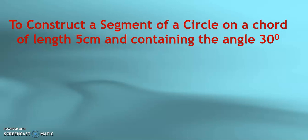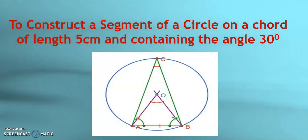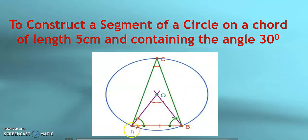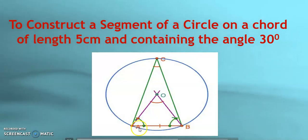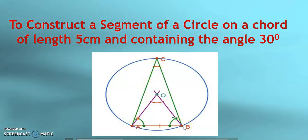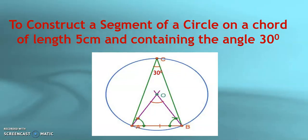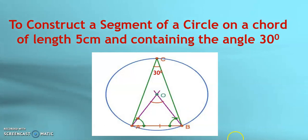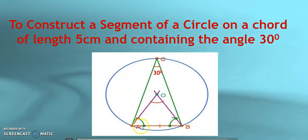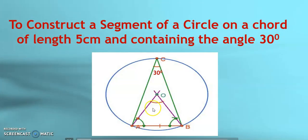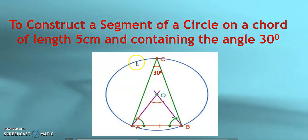Let us observe this figure, then we will try to construct it. You can see AB is a chord of this circle and the angle subtended by it at C, that is angle ACB, must be 30 degrees here in our case. Now, if you just observe it, you can see that the angle subtended by the arc at the center must be twice the angle subtended by it at any point on the circle.